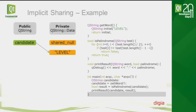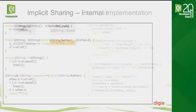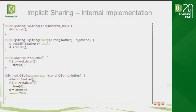When isPalindrome() is called, a new QString variable called 'test' is created referring to the same shared container, and when it goes out of scope the reference count decrements. Then printResult() creates another local QString called 'word' referring to the same shared container, and once execution returns from that function the reference count decrements back to one. Finally, when we go out of scope of the main function, the candidate string gets deleted, the reference count goes to zero, and the private shared container is deleted.